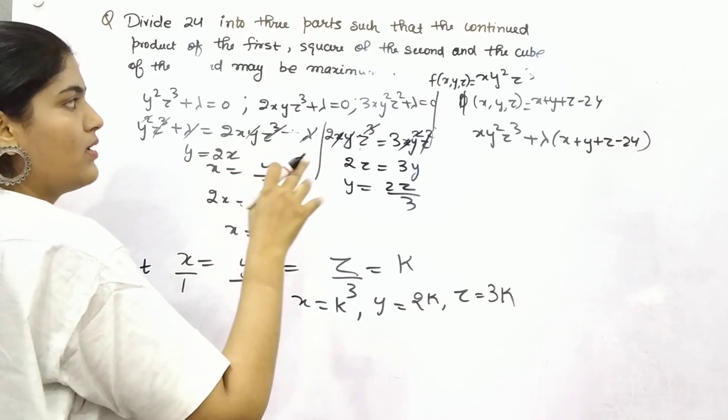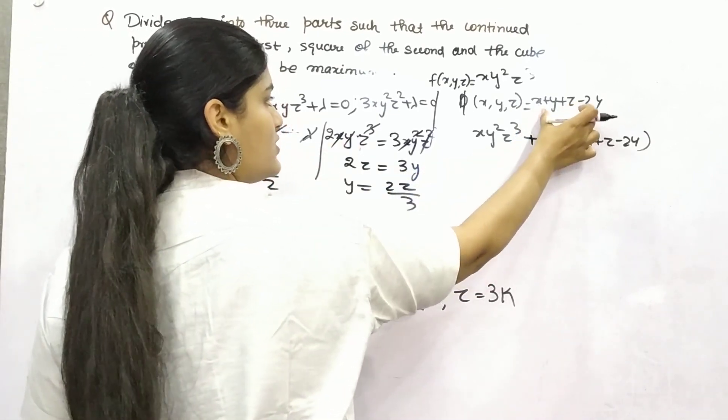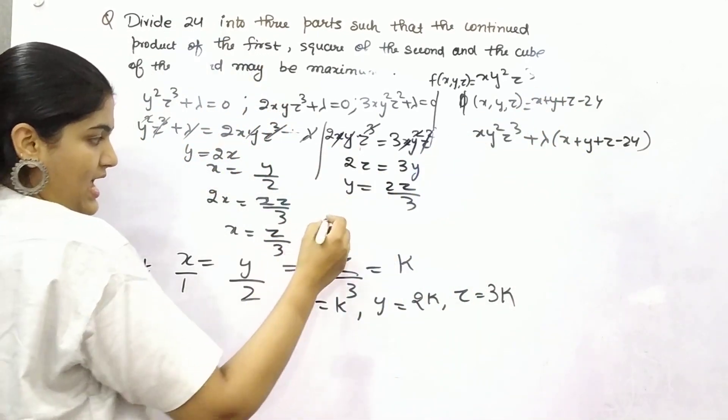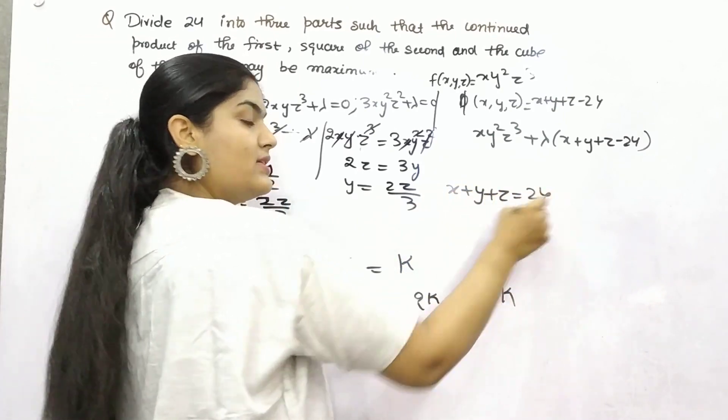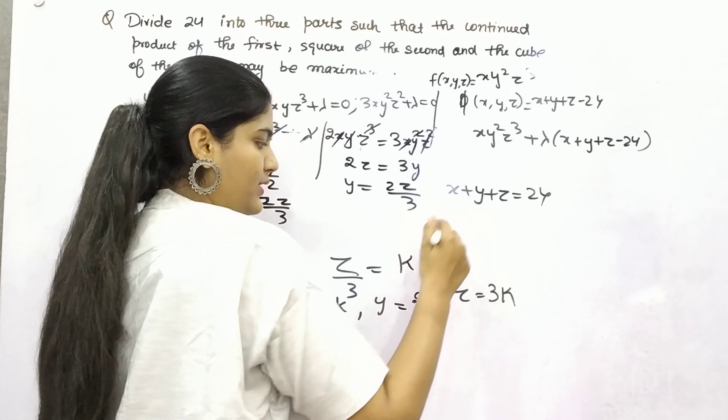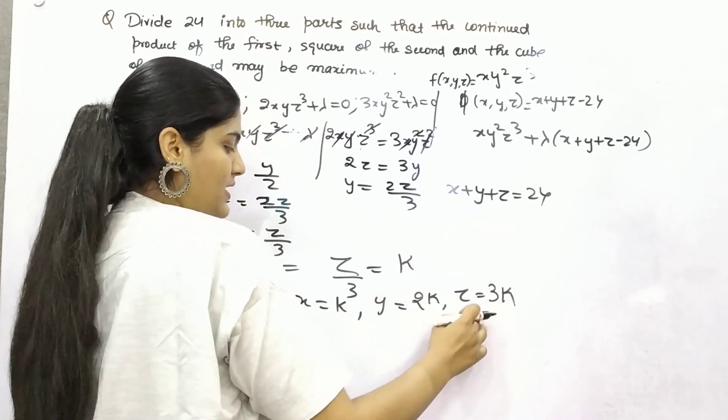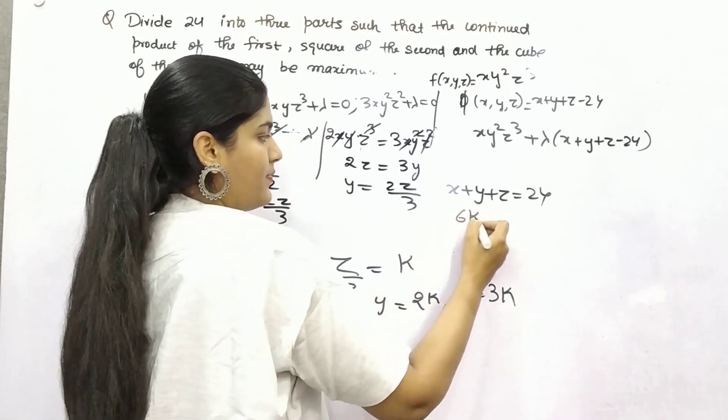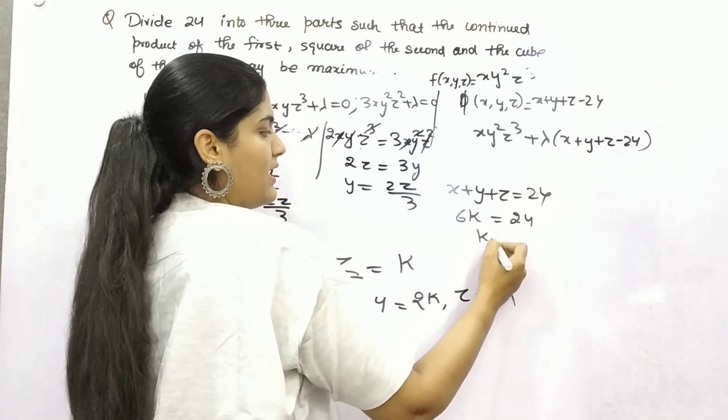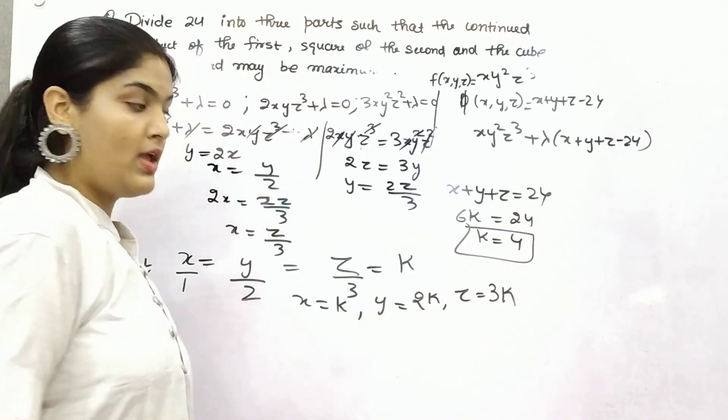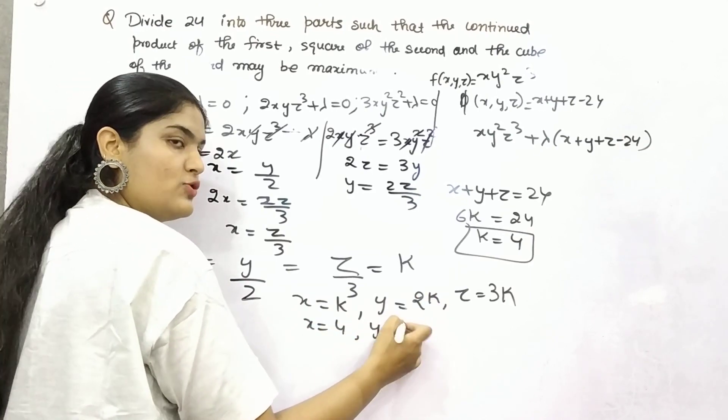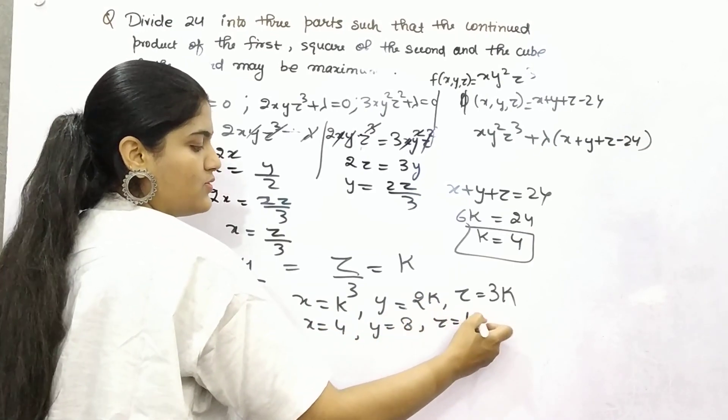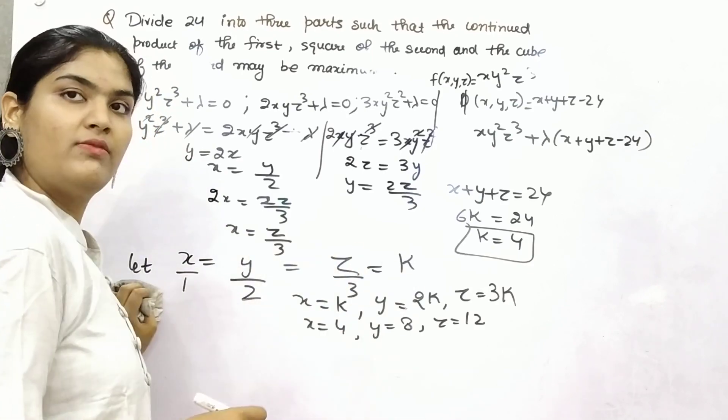Substitute this in any of the equation. So this was your equation initially: x plus y plus z equals 24. This was your main equation. So k + 2k + 3k = 6k equals 24, k is 4. So your x is 4, y is 4 times 2 equals 8, and z is 4 times 3 equals 12.